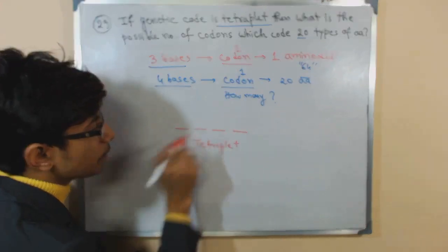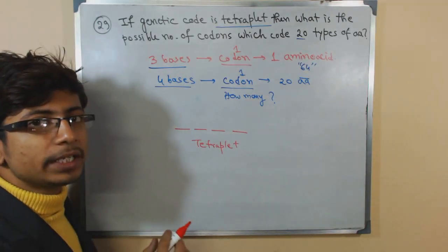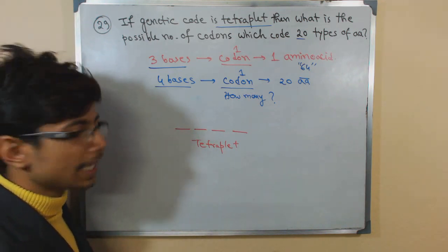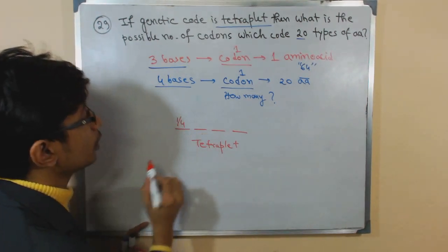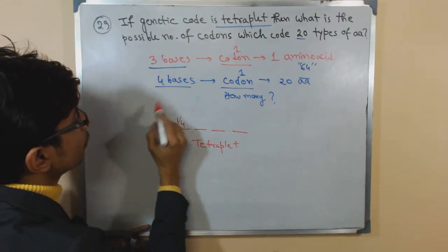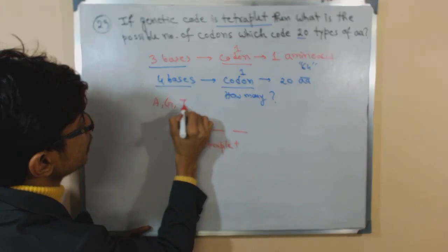Now in each position, there will be how many possibilities of placing one particular base? And the possibility is one out of four because we are having four bases actually: A, G, T, and C.